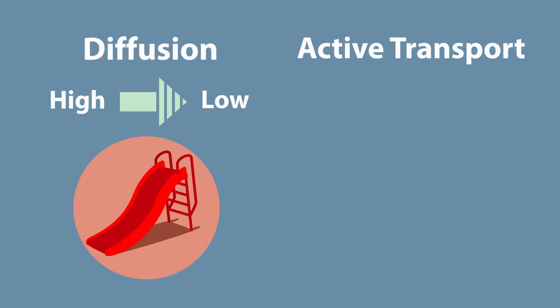whereas active transport is the opposite. The substance needs to move up the concentration gradient from a low concentration to a high concentration. Think of climbing a ladder. You need energy to go from low down to high up.